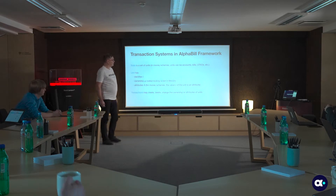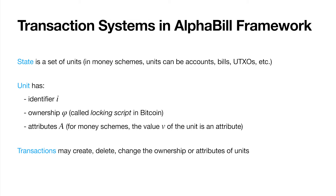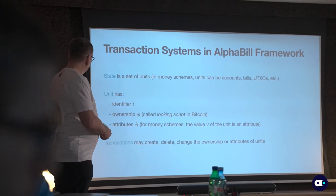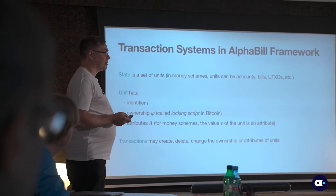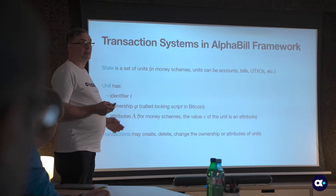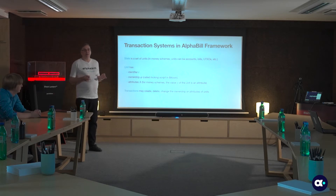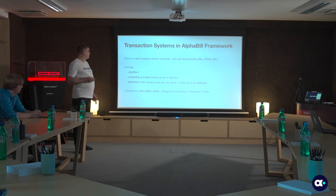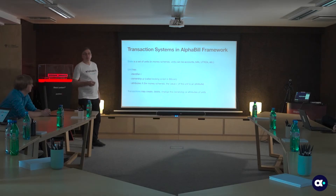In the Alphabill framework, there are special kinds of transaction systems. The state is represented as a set of units. They might be monetary units, bills, accounts, UTXOs, etc. Every unit has an identifier which uniquely identifies the unit. There is an ownership condition — for example, in Bitcoin the locking script is the ownership condition. It might be a public key, meaning that the next transaction with this unit should contain a signature that verifies with this public key. There are also other attributes, such as the value of the unit in money schemes.